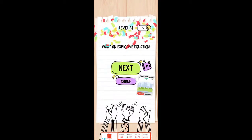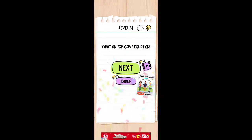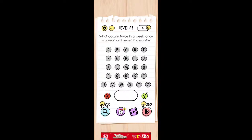It will become plus. What occurs twice in a week, once in a year, and never in a month? As you can see, the spelling of the week has two E's, double E. Year has one E, and month doesn't have any E.